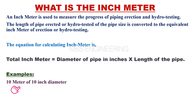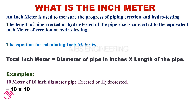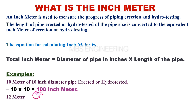To calculate the inch meter for 10 meters of a 10-inch diameter pipe: the total inch meter equals 10 multiplied by 10. Therefore, the total is 100 inch meters.